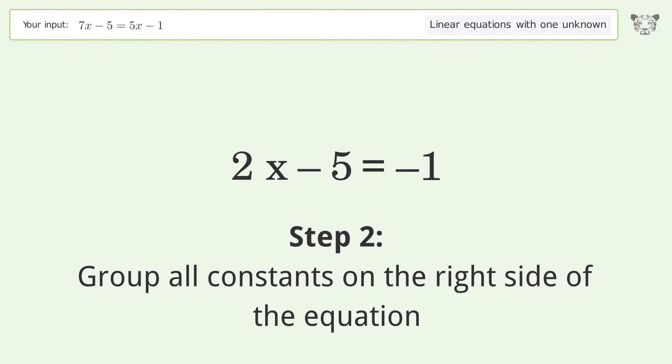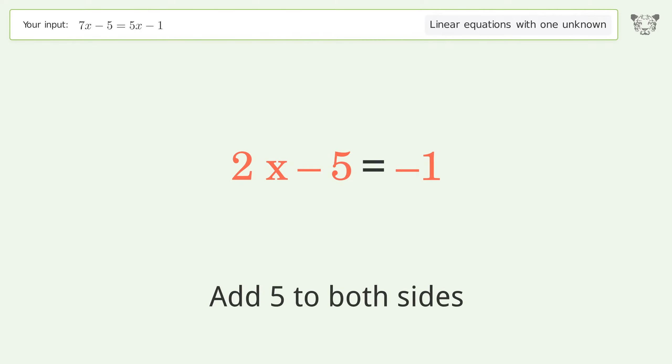Group all constants on the right side of the equation. Add 5 to both sides. Simplify the arithmetic.